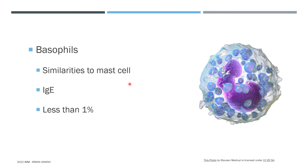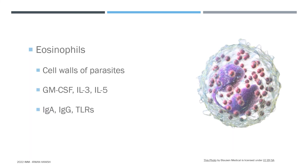Basophils are structurally similar to mast cells and have also been shown to interact with IgE, but they represent a very small part of the leukocyte population, so we're not entirely sure what they do. They may have played a crucial role against certain parasitic infections our ancestors had but we no longer encounter — so today they may be remnants of that immune defense. Eosinophils, on the other hand, use their granules to attack cell walls of parasites, punching holes in them with peroxidase or other lethal granules. To mature, eosinophils need cytokines like GM-CSF, IL-3, and IL-5.